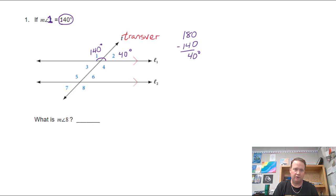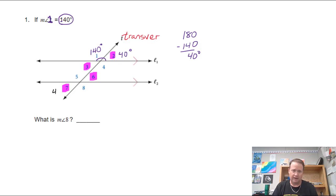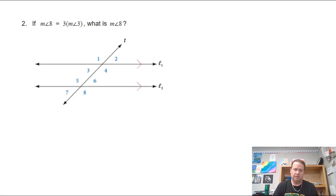Now I know every other angle. Angle three is also 40 — it's vertical to angle two. Angles two and six are alternate interior angles, so angle six is also 40, and angle seven is also 40 degrees. Every acute angle is 40 and every obtuse angle is 140 — so angles four, five, and eight are all 140 degrees.